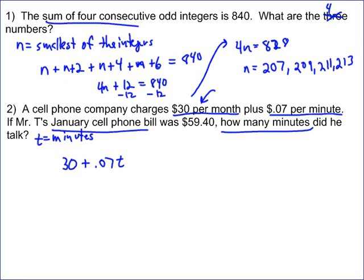Well, so the $30 plus your 7 cents T, if you put that equal to 59.40, we should be able to solve this problem. To do it, we're going to subtract 30. We're going to get 0.07T equals 29.40.